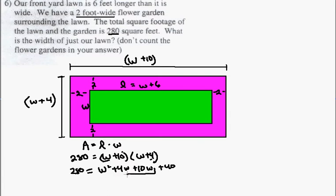Combining my like terms right here, now I get 280 is equal to w squared plus 14w plus 40. So I'm going to take that equation, let's move that up here, so we have room to work, all right?